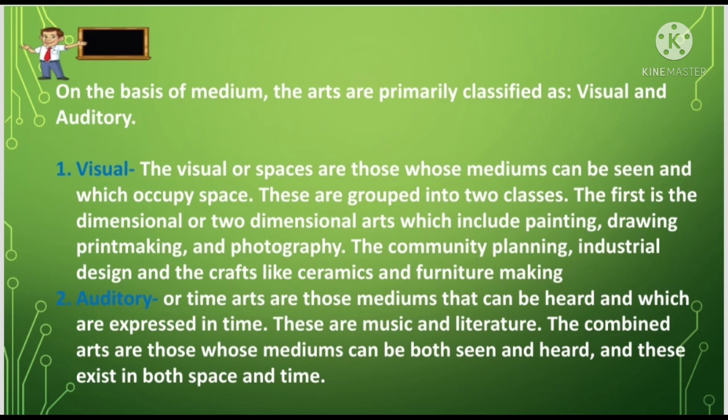In our previous lesson, we discussed already the definition of visual and auditory. But let us discuss again this topic — the perfect definition of visual and auditory — so that you can understand well our new topic, which is the production of arts. In the visual, the visual or space arts are those whose mediums can be seen and which occupy space.